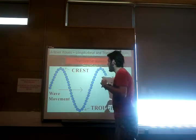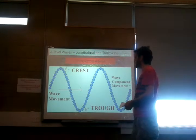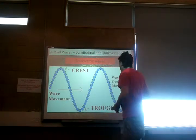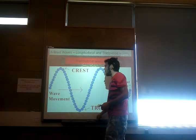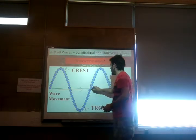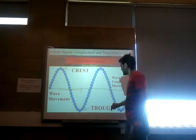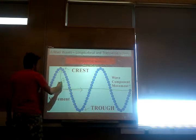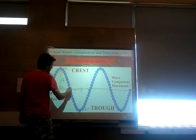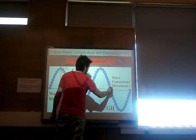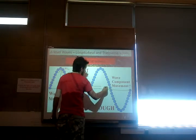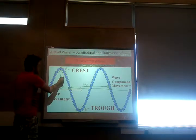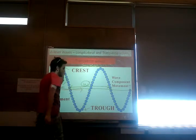Moving on to transverse waves - this should not be an alien picture. We have our crest or peak, we have our trough, this is our wave movement, and the centre line is our line of zero displacement or zero disturbance. The amplitude A is marked from the centre line to the peak, and the wavelength W is measured from one point on a wave to exactly the same point on the next wave.